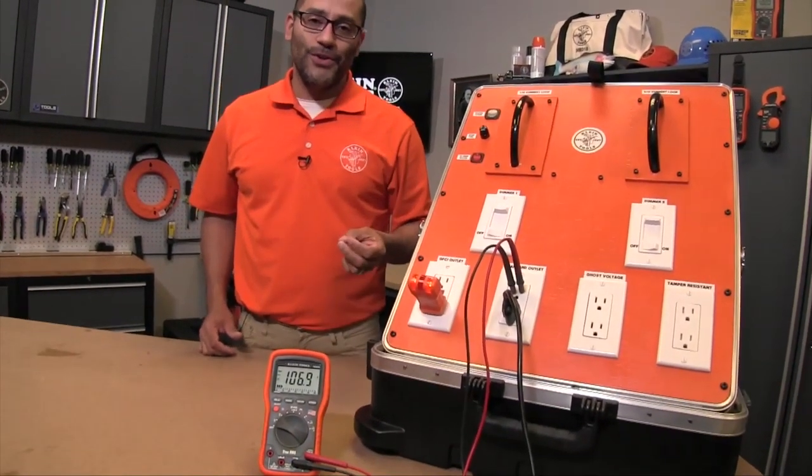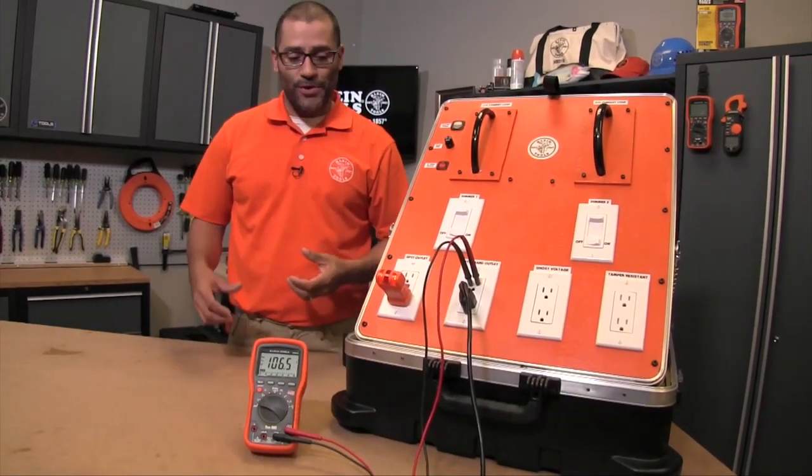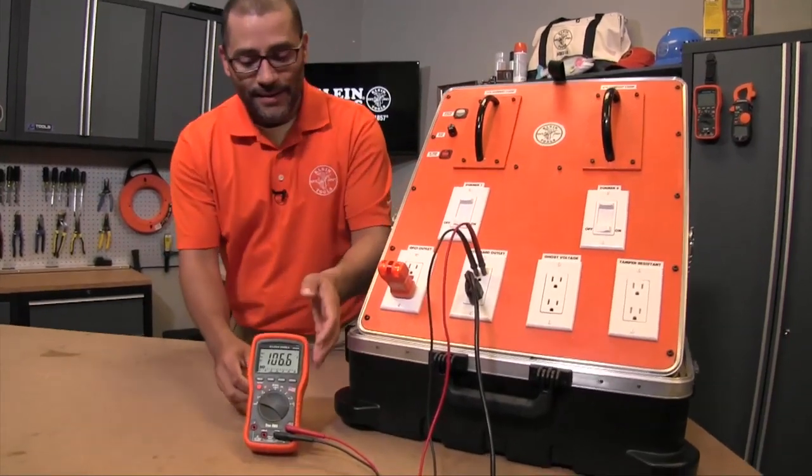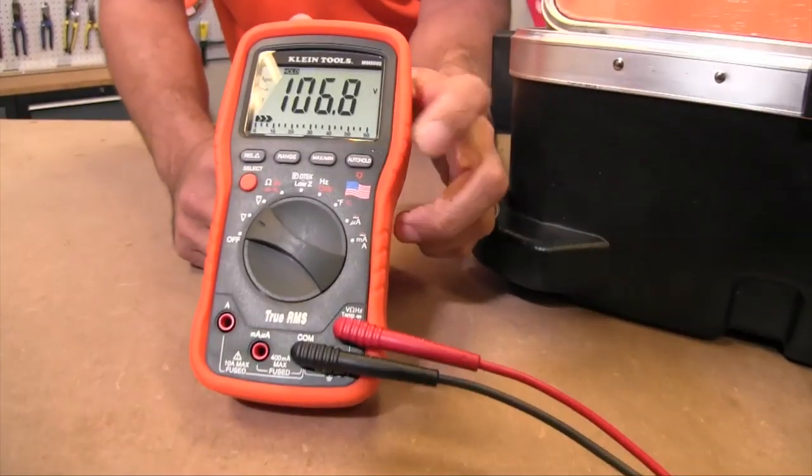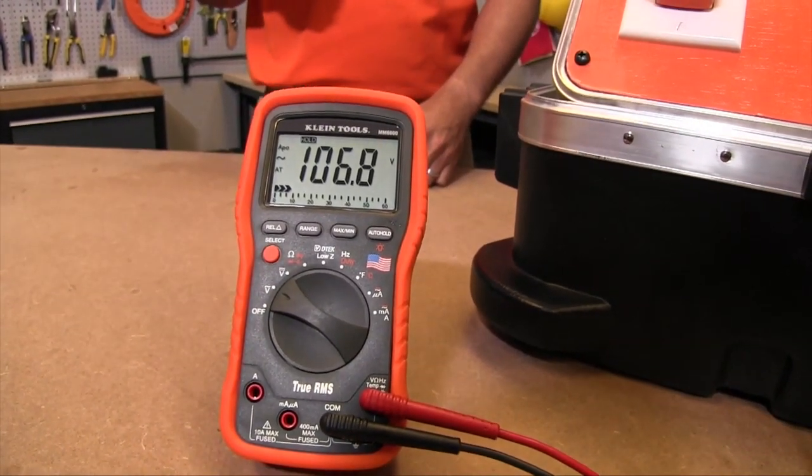With the hold feature, hold is designed to capture the reading you see on the screen. You're taking your measurement, you've got the meter in front of you, you hit the hold button, and right here you see hold pops up and it locks in the voltage at 106.8 volts.